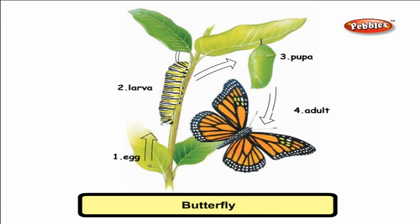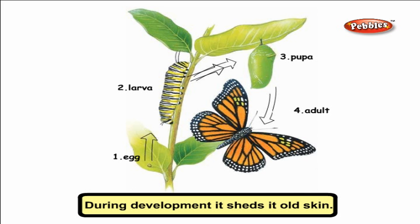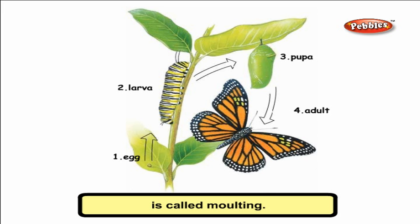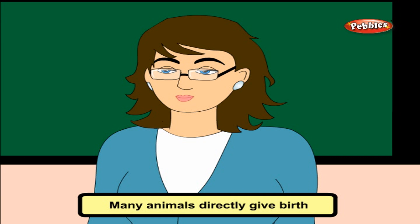Insects — Butterfly: The life cycle of a butterfly also shows metamorphosis. The baby looks very different. During development, it sheds its old skin. This process of shedding old skin is called moulting.